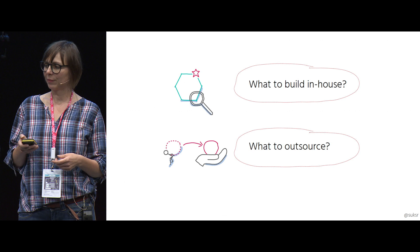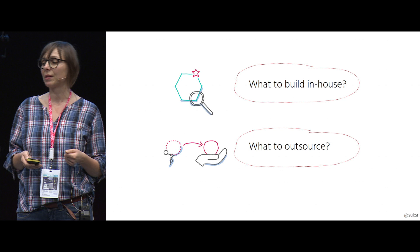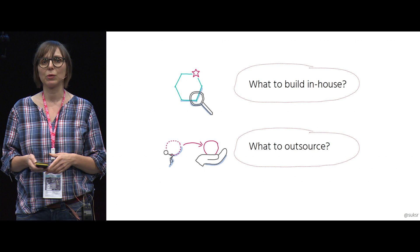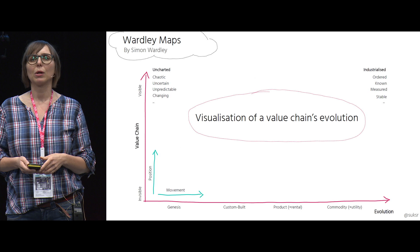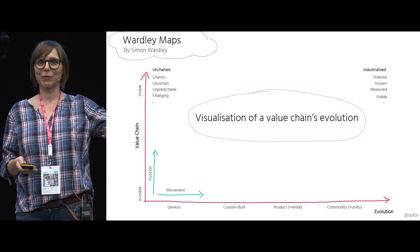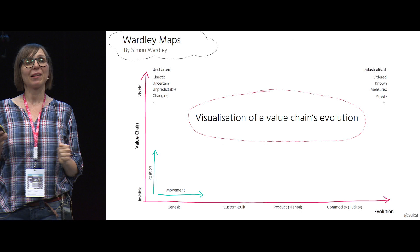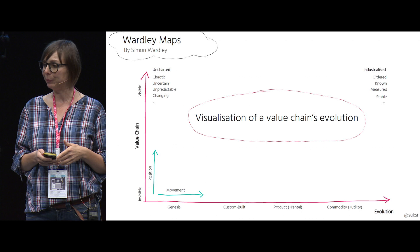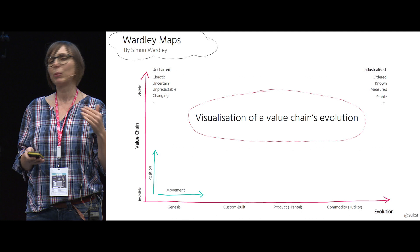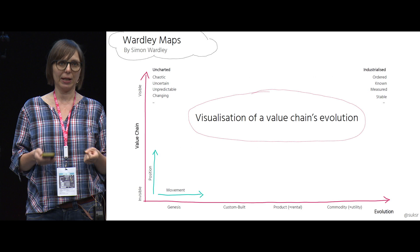So how do you identify what to build in-house — what gives you competitive advantage — and what to outsource to utility suppliers? That's where Wardley Maps come in. Wardley Maps is a technique created by Simon Wardley, a researcher from the UK. It's a landscape showing the business operating environment, and it visualizes the evolution of a value chain.